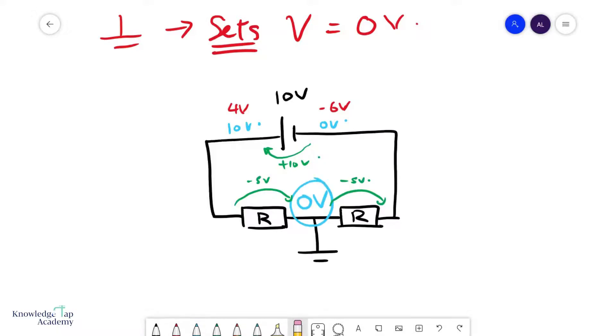And in this case, because the earth is there, it has to be zero volts over there. Now this will then set all the potentials in every part of the circuit, and so of course what you'll have over here would be minus 5 volts, and what you'll have here is plus 5 volts. So the earth sets the potentials.